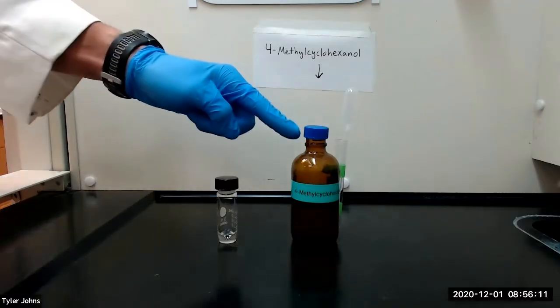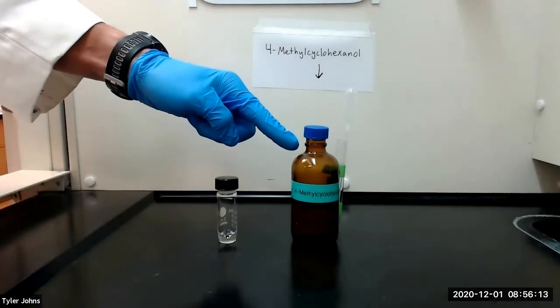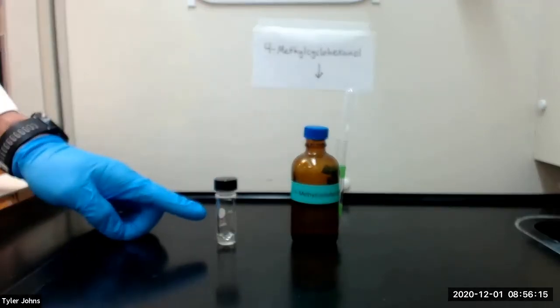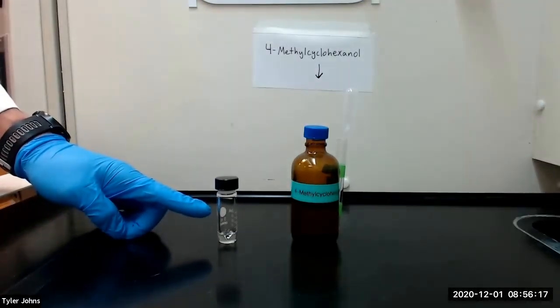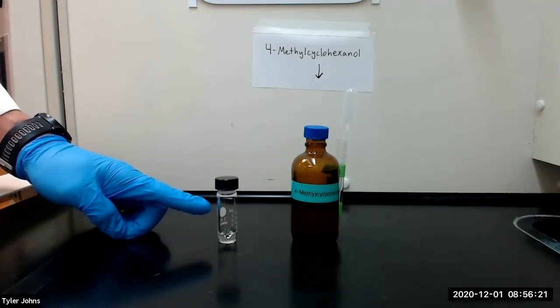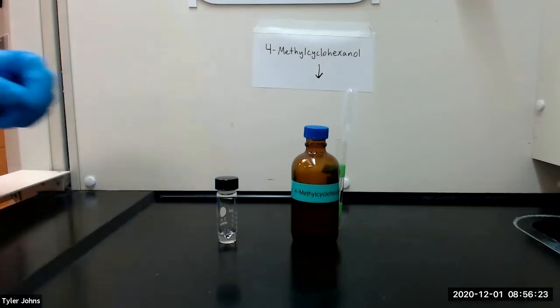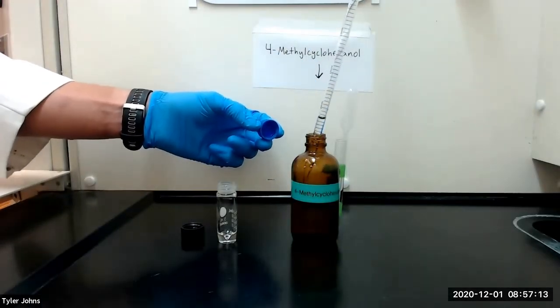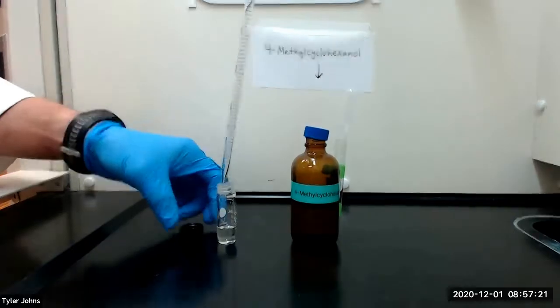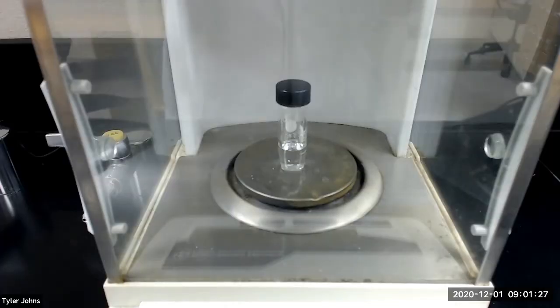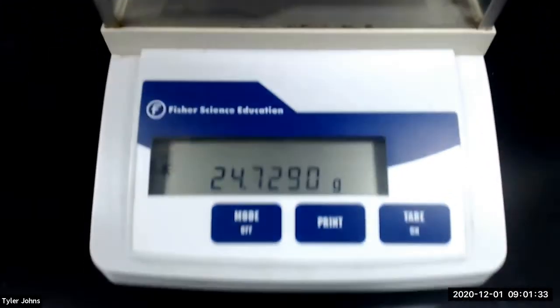We will next add 1.5 milliliters of 4-methyl cyclohexanol to the pre-weighed 5-milliliter conical vial and then re-weigh the vial to determine the exact weight of the 4-methyl cyclohexanol that we will be using. The mass of the pre-weighed 5-milliliter conical vial plus the 4-methyl cyclohexanol is 24.7290 grams.